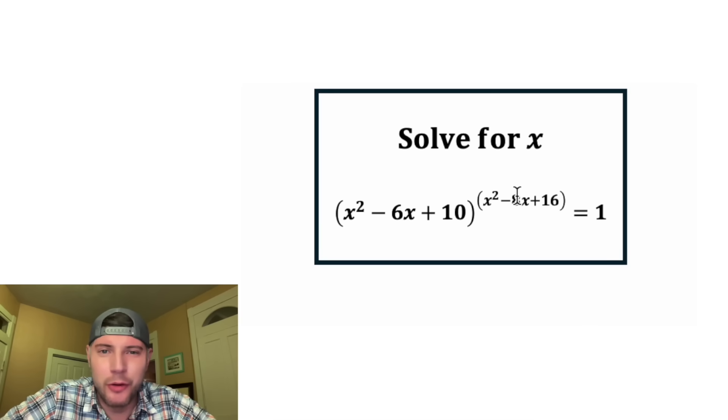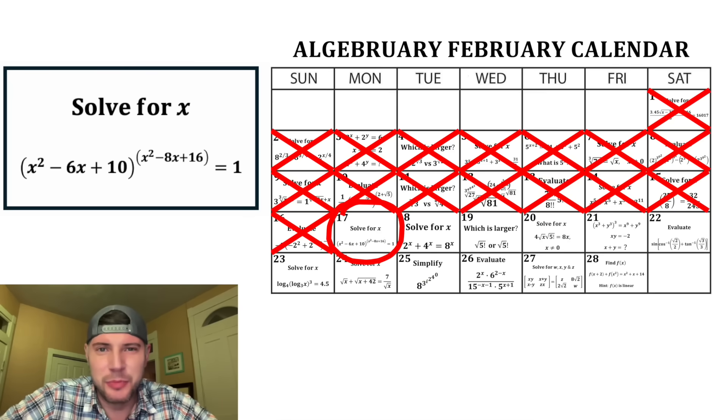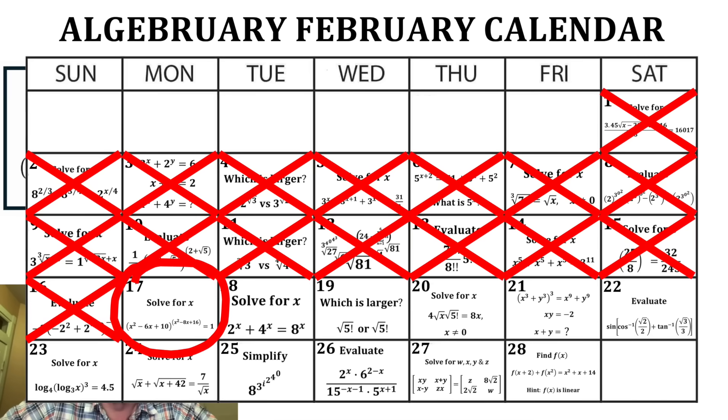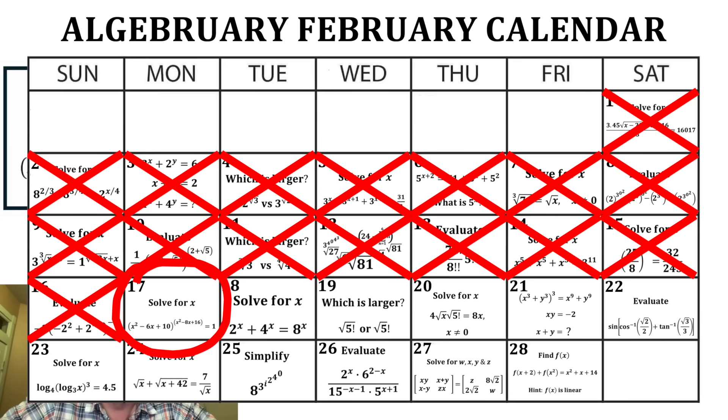Hey guys, this looks like a fun one. It says solve for x. We're given x squared minus 6x plus 10 to the power of x squared minus 8x plus 16 is equal to 1. This is day 17 of our algebraic February calendar. For the month of February, we're going to solve 28 algebraic problems. It looks like there's some pretty cool ones on here.